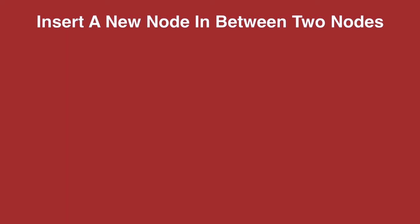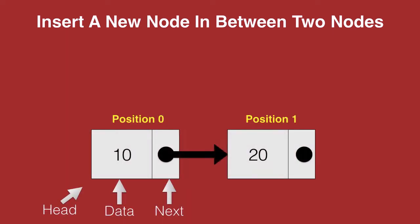Let's take an example of a singly linked list. We have a list with two nodes: the head node with data 10 and the second node with data 20. Their positions are numbered starting from 0, so we have the head node at position 0 and the second node at position 1.